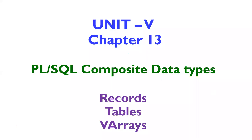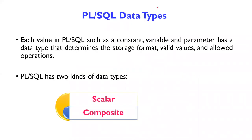Now we will move to our fourth unit that consists of two chapters, chapter 13 and chapter 14. Chapter 13 is about the PL/SQL composite data types. That composite data type has three subdivisions: records, tables, and V arrays. In today's class, we are only going to concentrate on the topic of records, which is one of the composite data types.